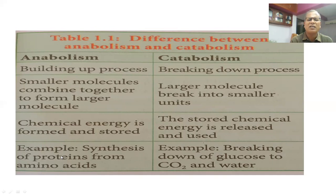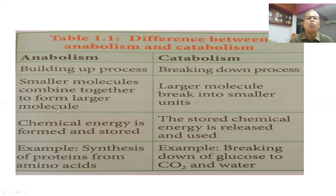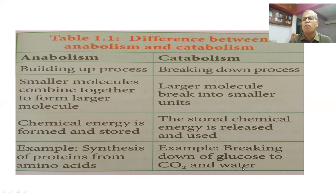An example of anabolism is photosynthesis. An example of catabolism is respiration — the breakdown of carbohydrates, release of energy, liberation of carbon dioxide, and formation of water.